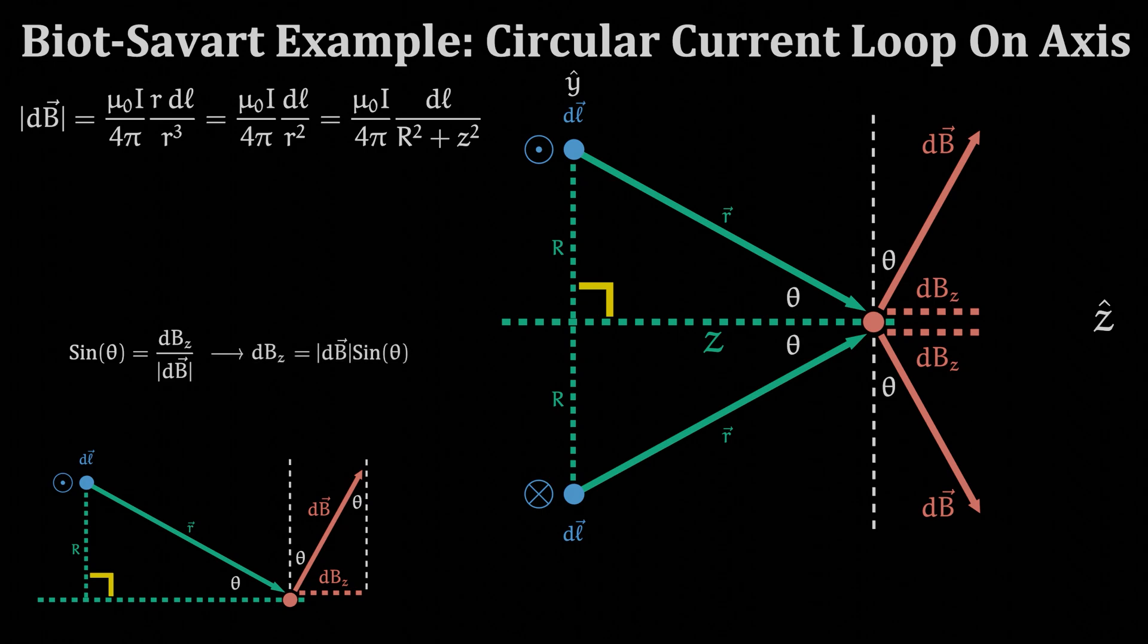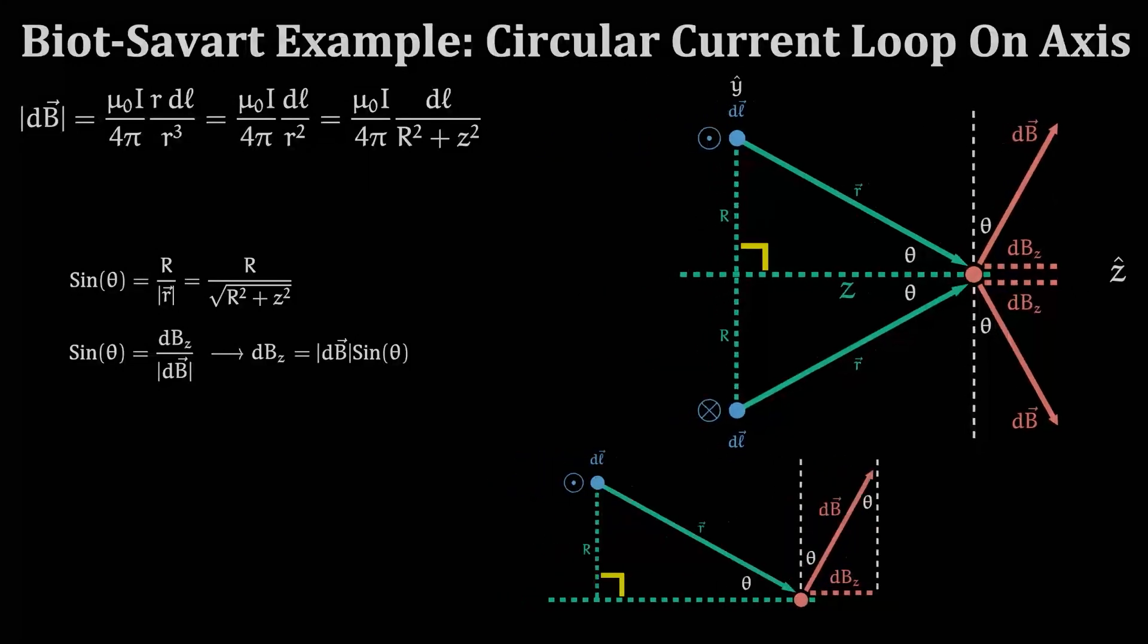We can then take a look back at our original diagram's triangle, the green triangle, and find another equivalent way to write this sine of theta as the radius of the circle capital R divided by the magnitude of vector r. From our Pythagorean theorem earlier we can substitute for the magnitude of vector r. Putting this all together we get an equation for the z component of vector dB.